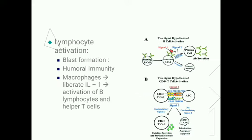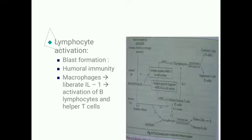The next step is lymphocyte activation. Lymphocytes enlarge and form an enlarged cell known as a blast cell. Activated B lymphocytes and helper T cells are responsible for humoral immunity. When macrophages liberate interleukin-1, as seen in the diagram, macrophages secrete interleukin-1 and cause activation of B lymphocytes and helper T cells.